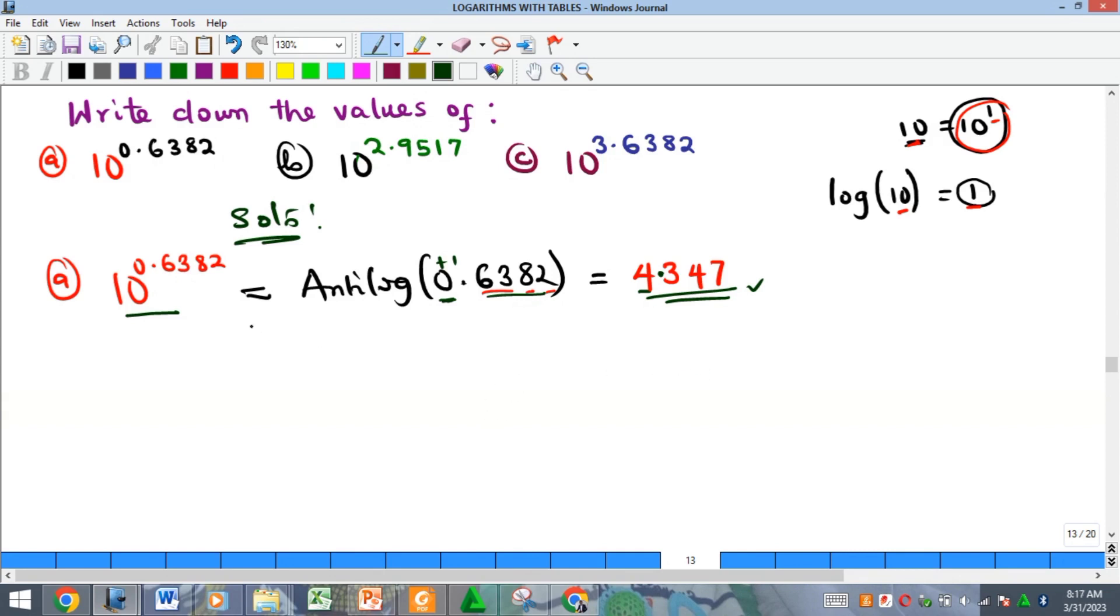You can use a calculator to confirm that it is the same. So what about example B? We have 10 raised to the power of 2.9517. What is it going to be? It means I'm looking for the antilog of 2.9517.